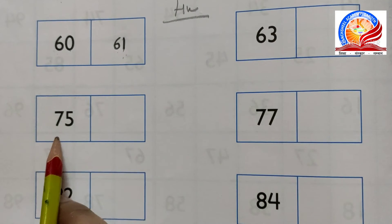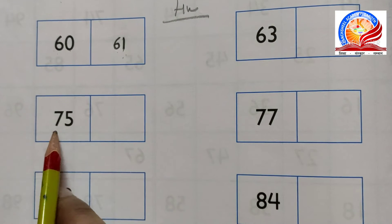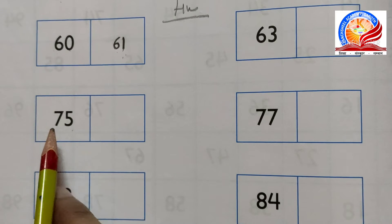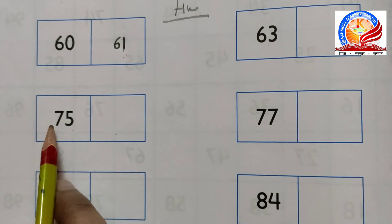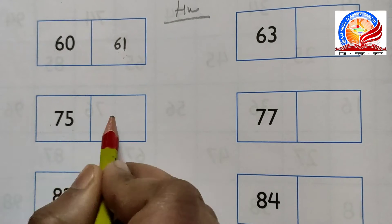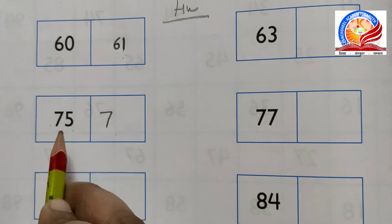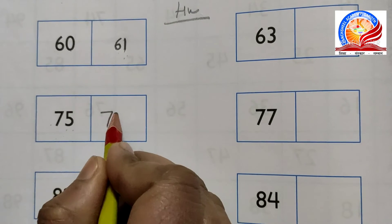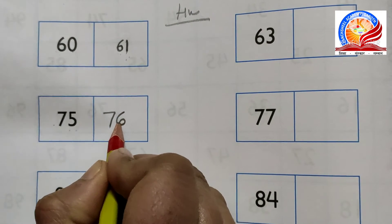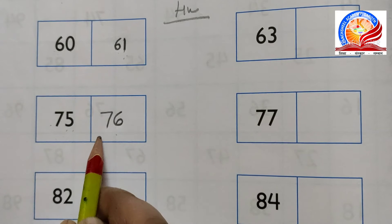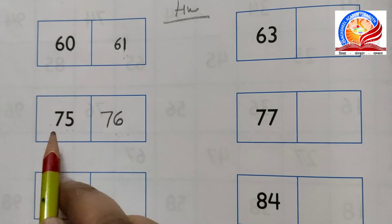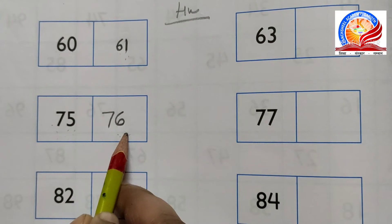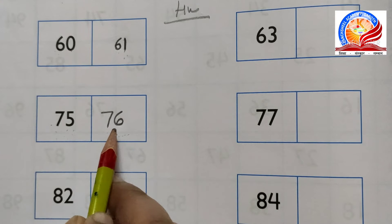Which number comes just after 75? 75 ke baad mein kaun sa number aata hai? Yeh 7 ki line hai isliye hum likhenge 7. And after 5, which number comes after 5? We will write 6. So this is 7, 6 - 76. After 75, which number comes after? 76.